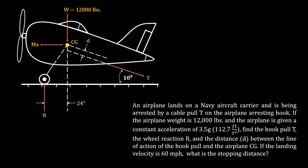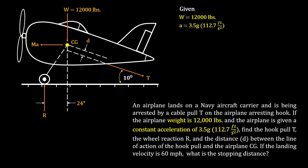Whenever we solve a problem, it is important to use the GRS approach in order to make our solution much more organized. The first of which is our givens. We have the weight of the airplane equals 12,000 pounds, and our constant acceleration equals 3.5G.